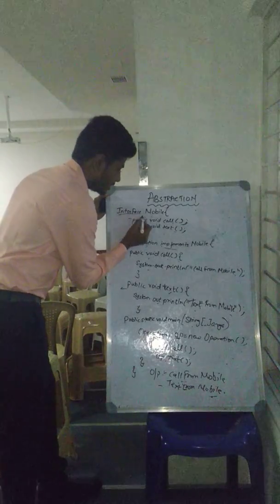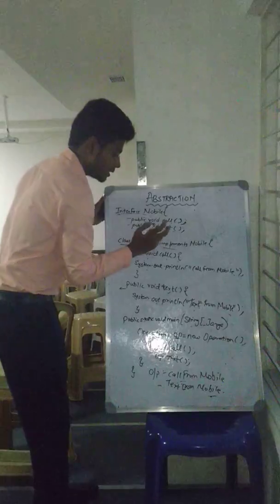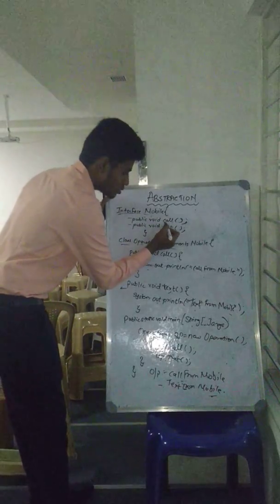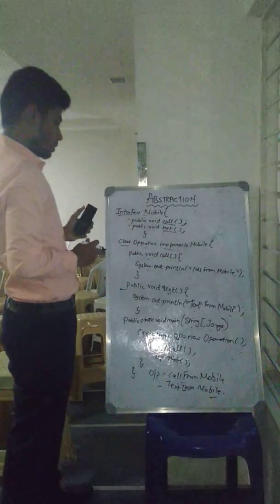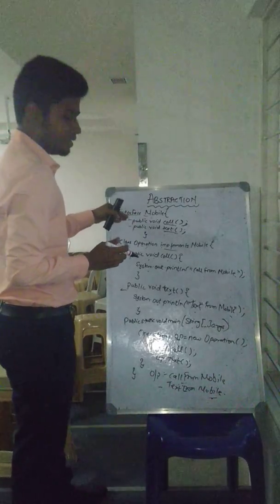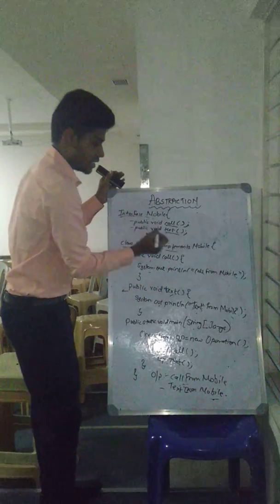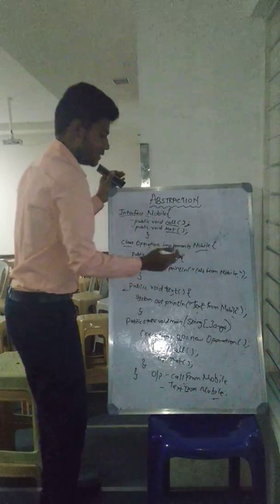We declare interface with given name as mobile. In that, we have two abstract methods. First method is call method and another one is text method. And we want to use the property of the interface, so we have implement the interface here. Implements mobile interface.